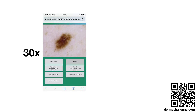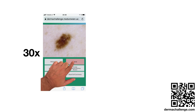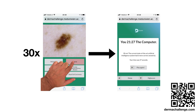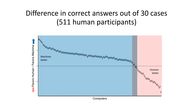Every user had to predict the diagnosis for 30 cases and got a score where their answers were compared — better, worse, or equal to an algorithm. Analysis after over 500 human participants showed that about two-thirds of computer algorithms clearly outperformed humans on the number of correct answers.